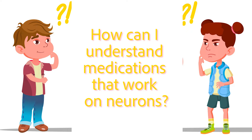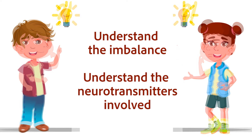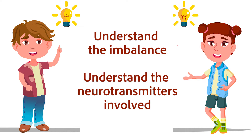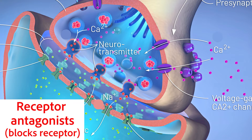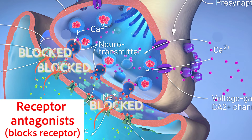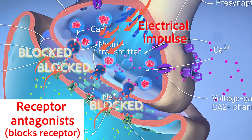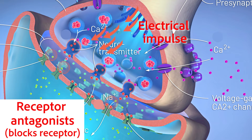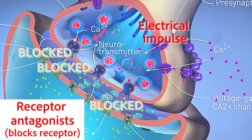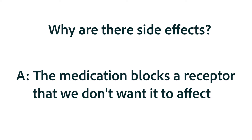Understanding medications that work on neurotransmission is one of the most difficult areas of pharmacology. But if you understand the imbalance that has occurred and the neurotransmitters involved, you're much closer to understanding the drugs that work on neurons. For emesis, it's complicated by the fact that there are four separate pathways, but it's less complicated because most of our anti-emetic drugs are receptor antagonists for a particular neurotransmitter. When we feel nauseous, the vomiting center is receiving too many neurotransmitter messages, so most anti-emetics block the neurotransmitter involved. Most side effects come from the medication binding in an area of the body or brain where we don't want it to act.